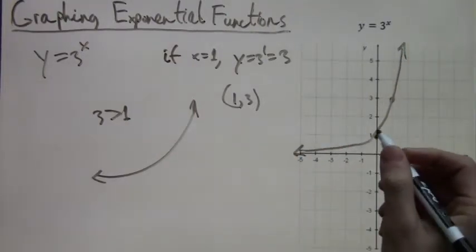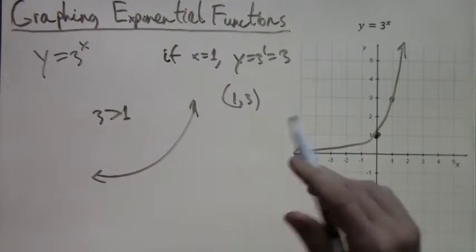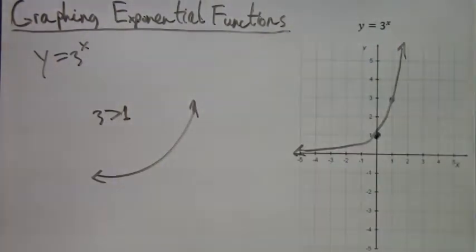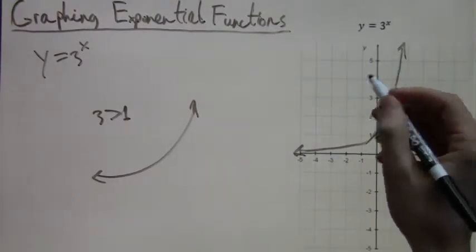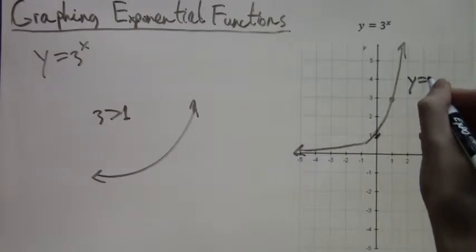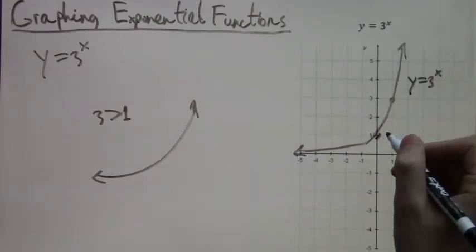And notice, we start very close to zero—not at zero, because it doesn't intersect zero—but very close. And then we curve up through the two points. That is what the graph should look like. Now we just label it y equals three to the x.